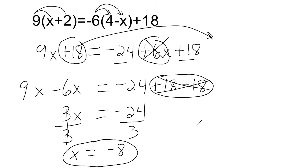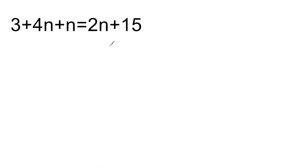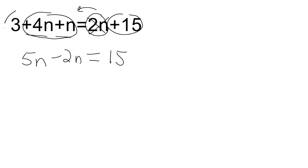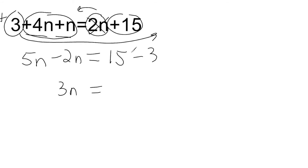Let's go ahead and do another example. What we're going to do is simplify as much as we can on the left first. On the right, there's nothing to simplify because we have an n term and a constant. So we rewrite this as 4n plus 1n, which is 5n. We combine those two terms and write the n term on the left. The 2n on the right-hand side we write on the other side of the equal sign as its opposite: minus 2n. We move all constants to the right — the 15 is already there, so we drop it down. The constant positive 3 moves to the other side as minus 3.